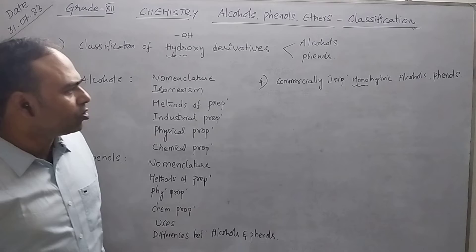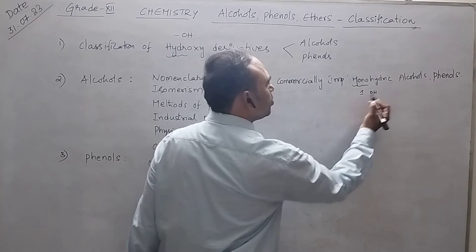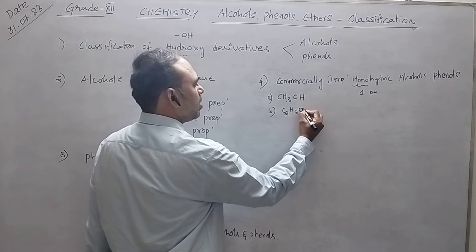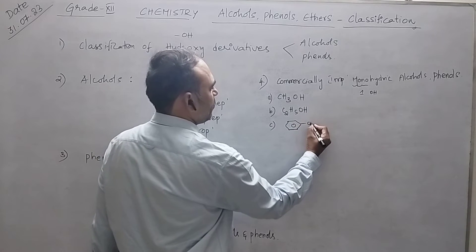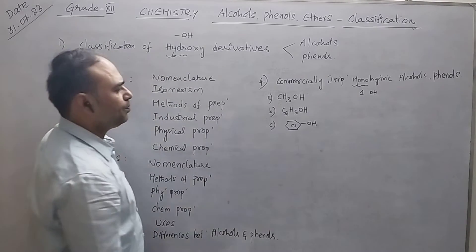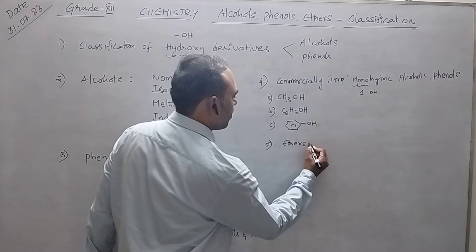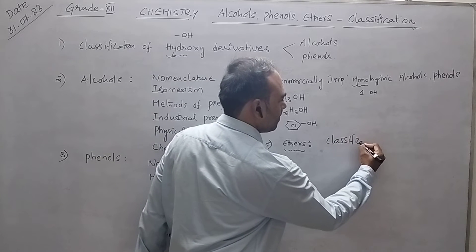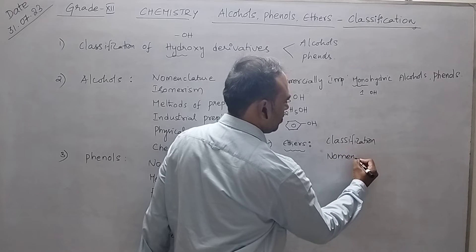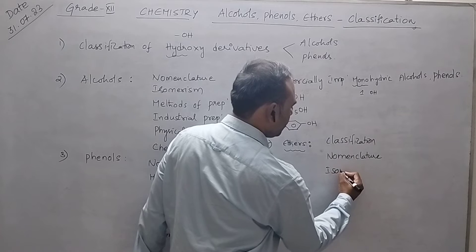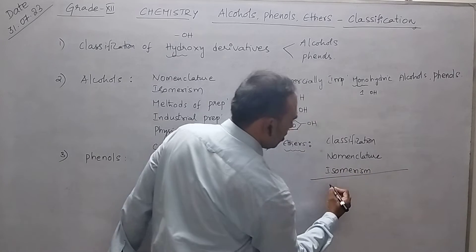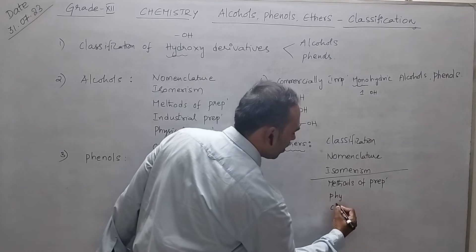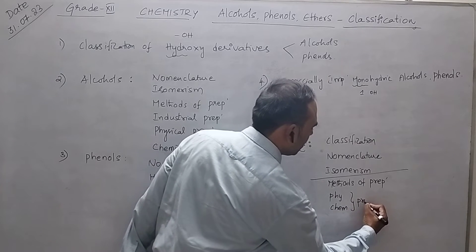Monohydric means which contains one OH group. The commercially important compounds are: first, methanol; second, ethanol; and third, phenol. The last topic is ethers. In ethers we first need to study classification, then nomenclature, followed by isomerism, methods of preparation, and physical and chemical properties.